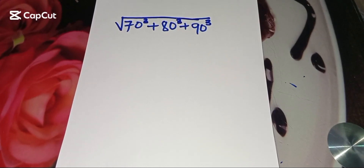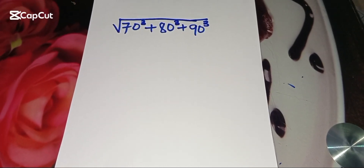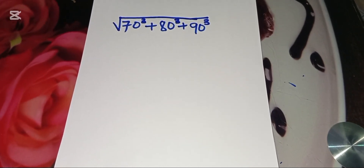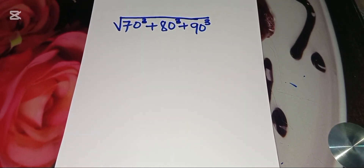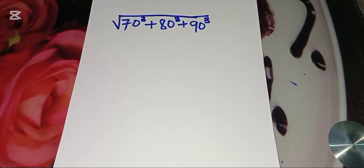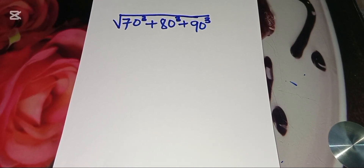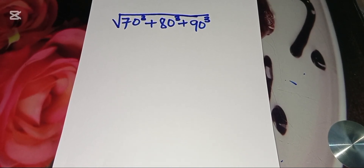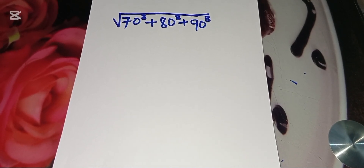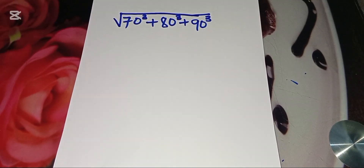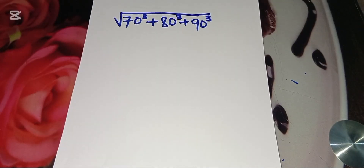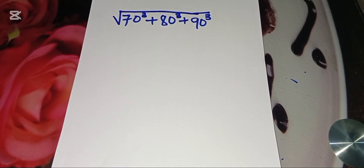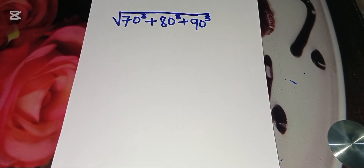Hello everyone, let's provide a solution to this nice square root math problem, which is the square root of 7 cubed plus 8 cubed plus 9 cubed. So how do we go about this?